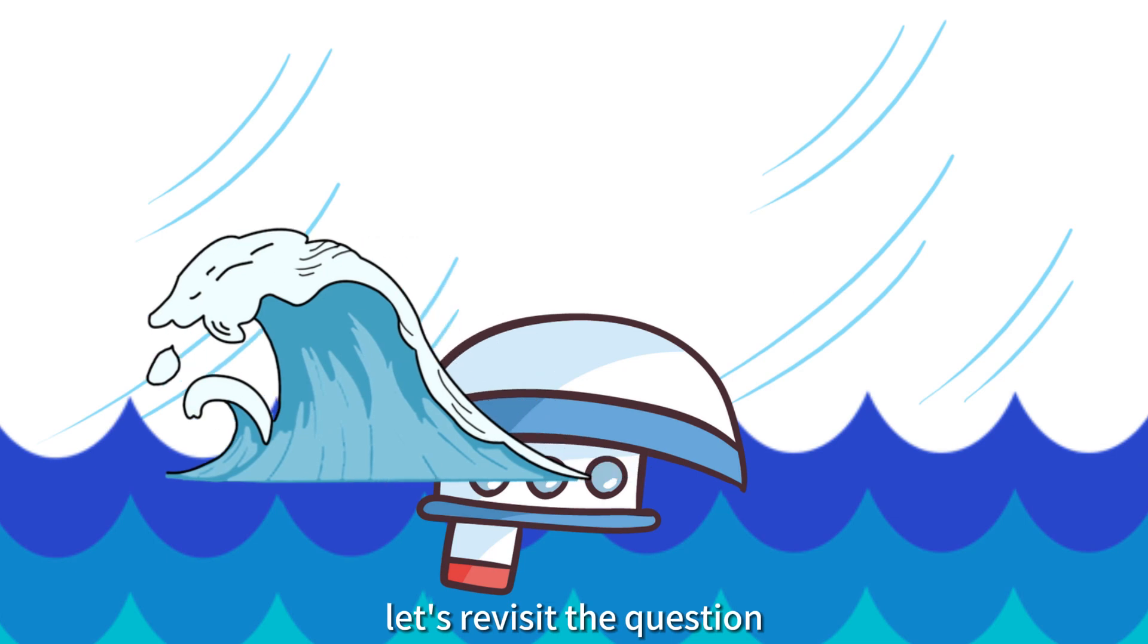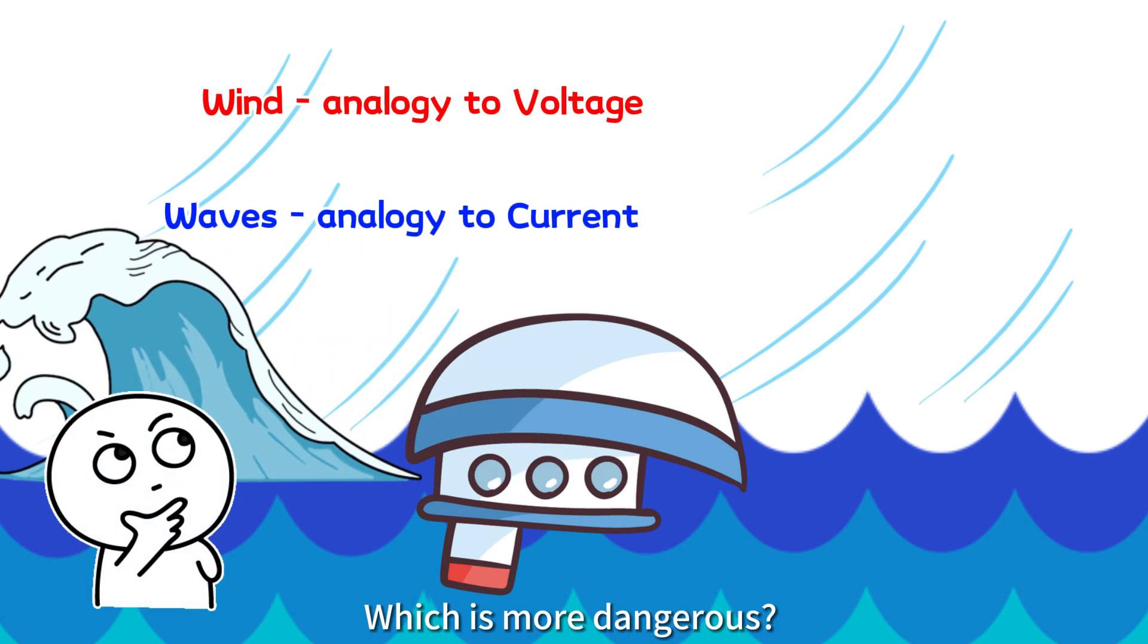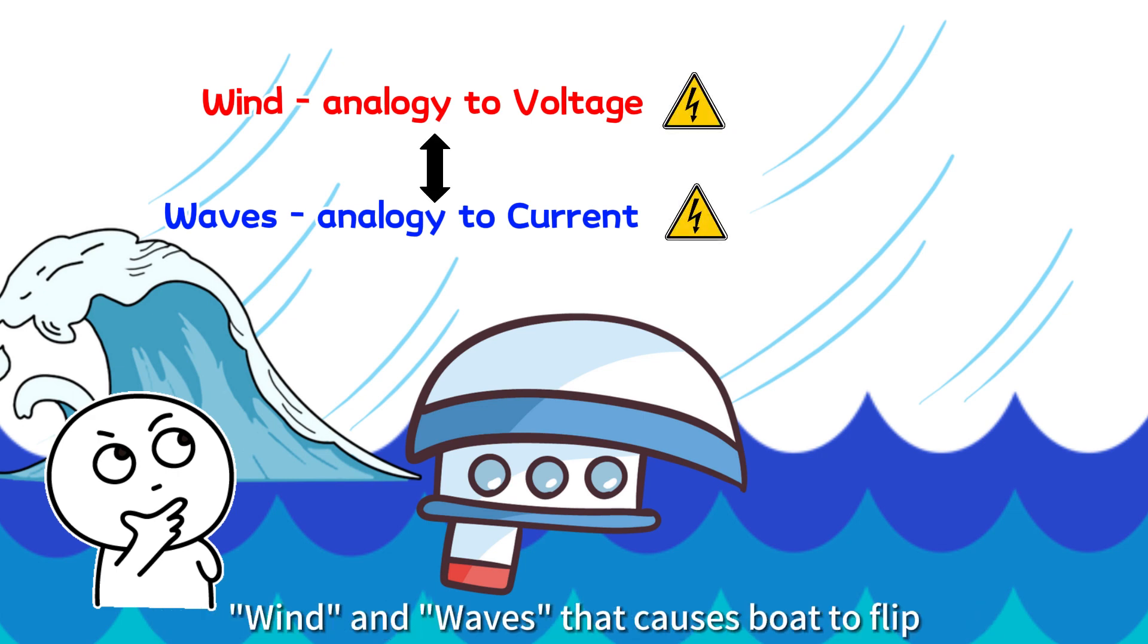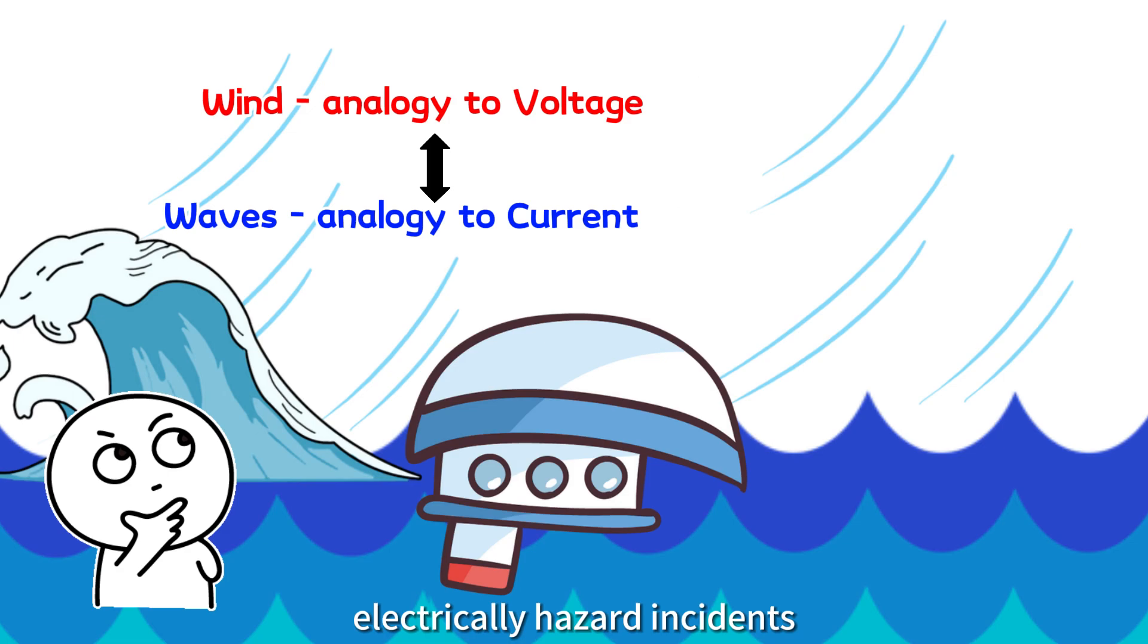In conclusion, let's revisit the question, which is more dangerous, voltage or current? In our opinion, both are closely interrelated, and both are dangerous. Just like the relationship between wind and waves that causes the boat to flip in our earlier analogy, both voltage and current contribute to electrical hazard incidents.